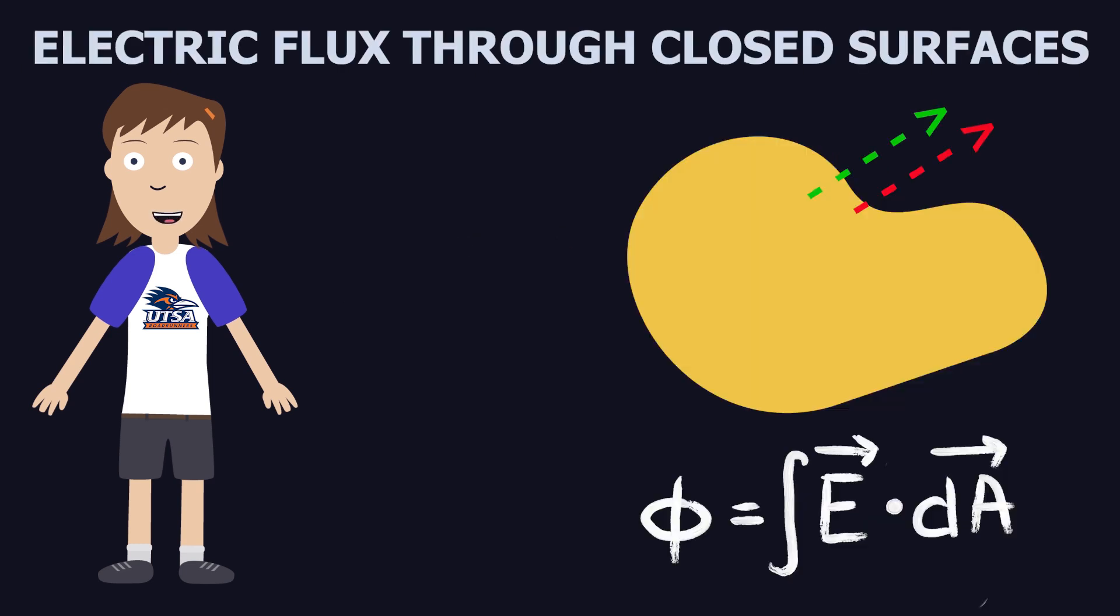Similarly, for the electric flux through a closed surface, the formula is the same and we can also represent this as Φ equals the integral of E dot dA.